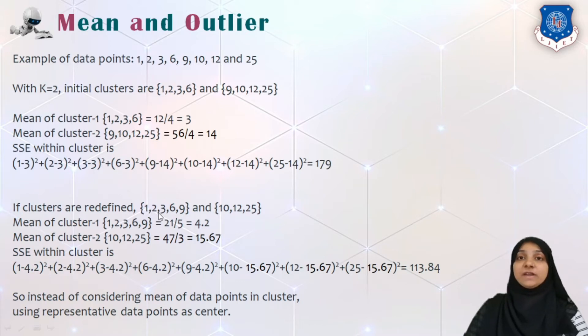Now if the clusters are redefined, say for example initially instead of these we will calculate first cluster as 1, 2, 3, 6 and 9, and second cluster as 10, 12 and 25, then mean of first cluster will be 1 plus 2 plus 3 plus 6 plus 9 divided by 5 and that would be 4.2, and the mean of second cluster will be 10 plus 12 plus 25 divided by 3 that is equal to 15.67. And similarly we will calculate sum of squared error term by subtracting each data point value from its corresponding mean, the difference squared, and the sum of all the values will be now 113.84.